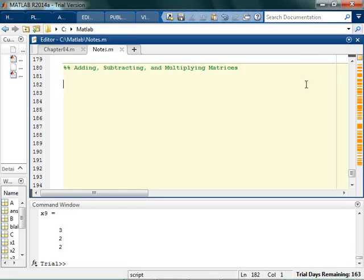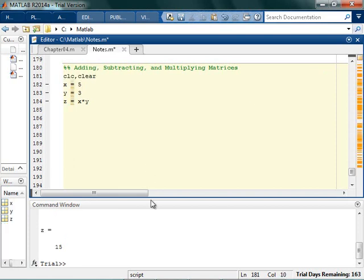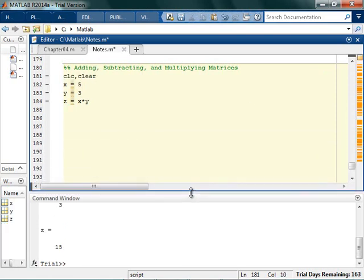Whenever we're adding, subtracting, or multiplying matrices, things get a little bit more complicated. It's straightforward if I say x equals 5 and y equals 3, and then z is 5 times x times y. It's perfectly happy, I get an answer. But it does get more complicated.